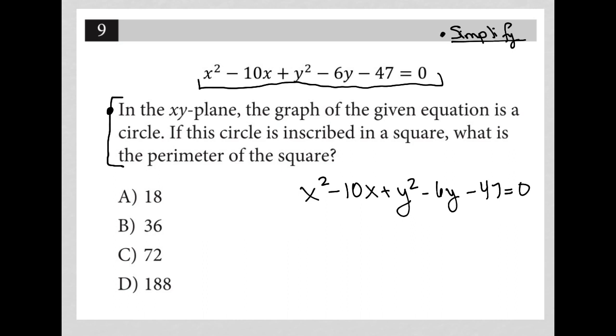The question says: in the xy-plane, the graph of the given equation is a circle. If this circle is inscribed in a square, what does that mean? Visually, that looks like this: square, circle, touches those four places. What is the perimeter of the square? Okay, so that means if I can find the radius of the circle, that would mean I can find the diameter of the circle, and the diameter of the circle would be the exact same length as a side of the square, and I can then multiply that by four.